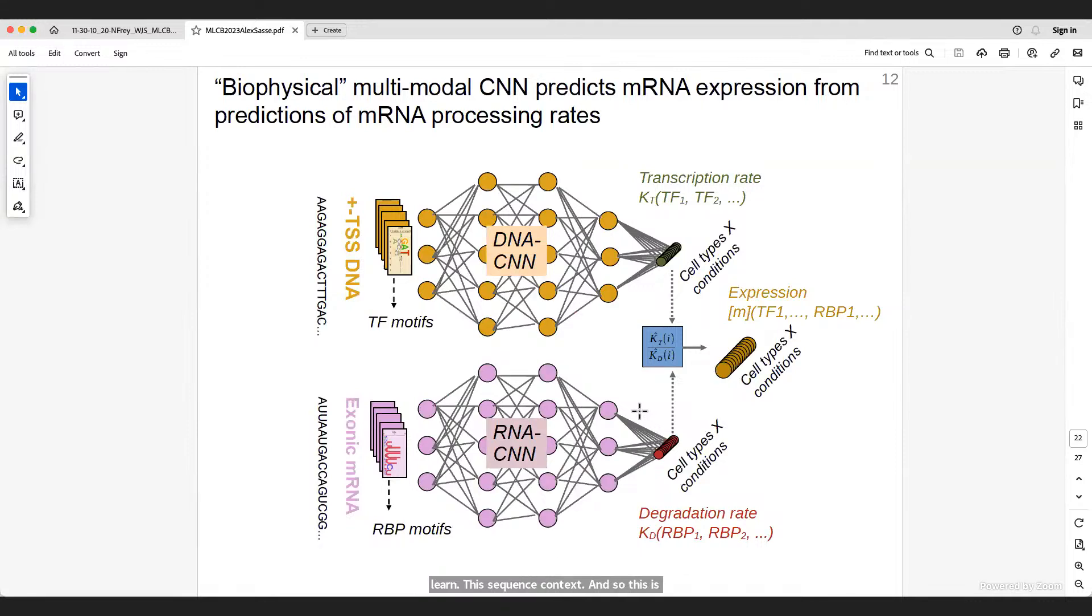And so, this is eventually the model that we're proposing and calling this a biophysical model because it uses DNA and RNA as input. And importantly, the DNA input, in this case, 40 kilobases, is only predicting the transcription rate whereas the exonic, the mRNA part and the mRNA model is only predicting the degradation rates that we have from the RNA-seq data. And then, the expression, the eventual expression that we measure is only predicted indirectly as the log ratio between the transcription rate and the degradation rate.